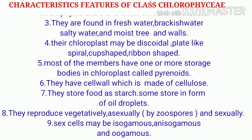They reproduce vegetatively by fragmentation, asexually by zoospores, and sexually. The sex cells may be isogamous, anisogamous, or oogamous. In this way you can understand the characteristic features of Class Chlorophyceae. In the next video I will explain further. Thank you for watching.